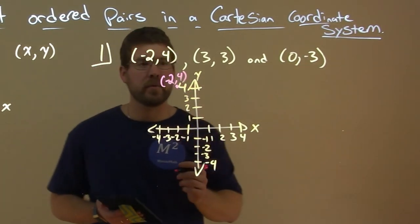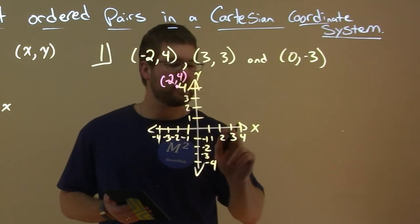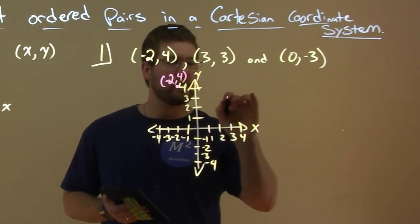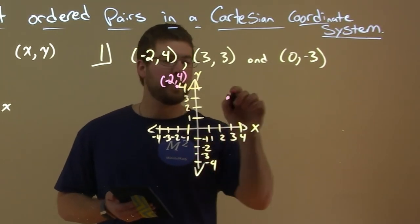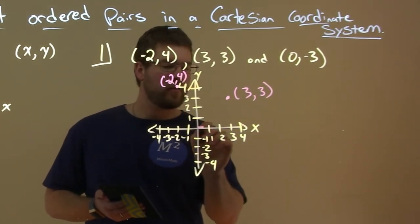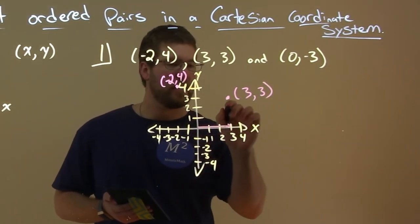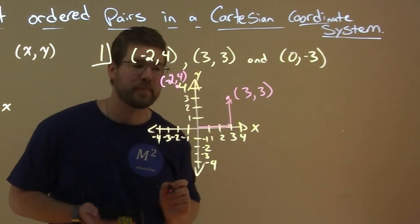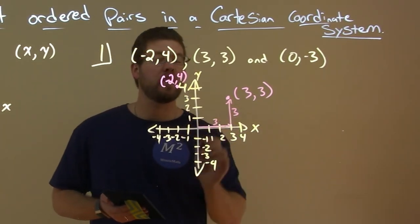Let's try 3 comma 3. That's 3 on the x-axis, and then 3 on the y-axis, which gives us this point right here. You can see it traveled across the x-axis here, and then up 3 units here. So 3 and then 3.